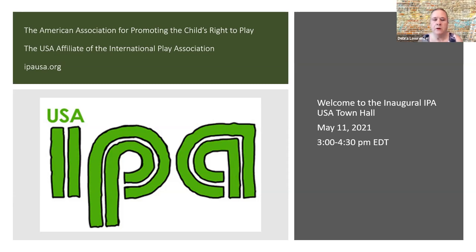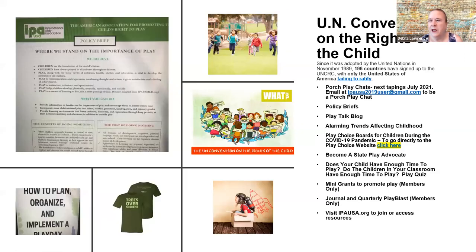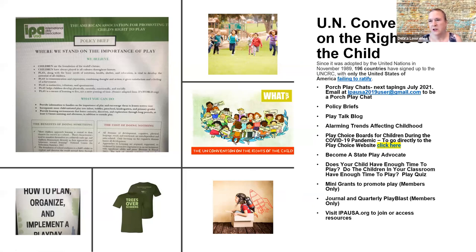IPA USA offers many things — I hope you'll investigate our website. Our primary role is to help the USA, which signed the UN Convention on the Rights of the Child during the Clinton administration, but the Senate has failed to ratify it. Of 196 countries that have signed and ratified it, the USA is the only one that has failed to put it into practice. We also create policy briefs; the one on the importance of play is available under our advocacy tab.